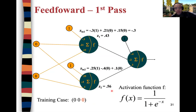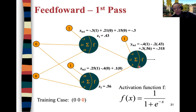Remember these values 0.43 and 0.56, because we'll need them later when we update the weights. For the output node, we feed z1 and z2 and compute the net activation: 0.43×1 − 0.2×0.43 + 0.3×0.56. This is the net activation. We feed it to the sigmoid and get the actual output: 0.42.